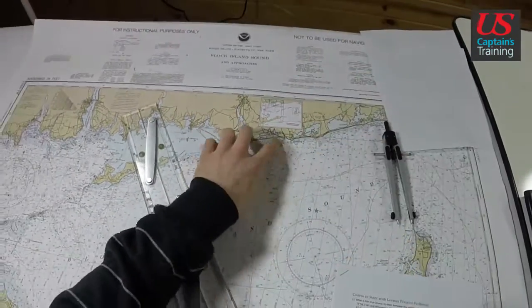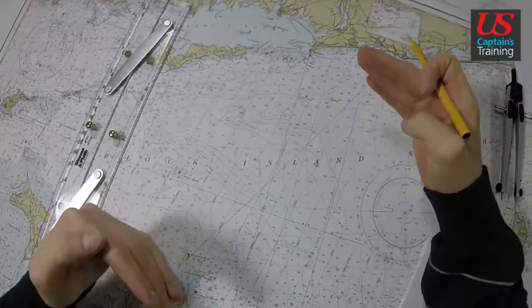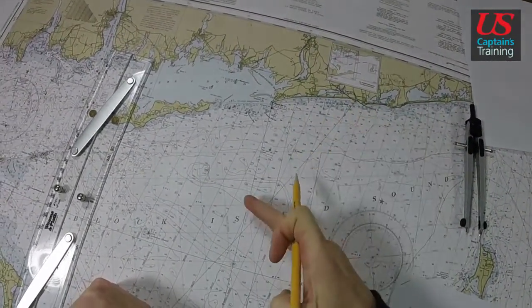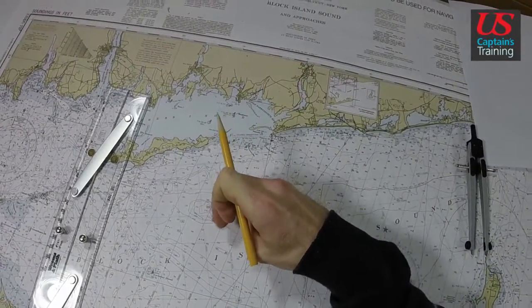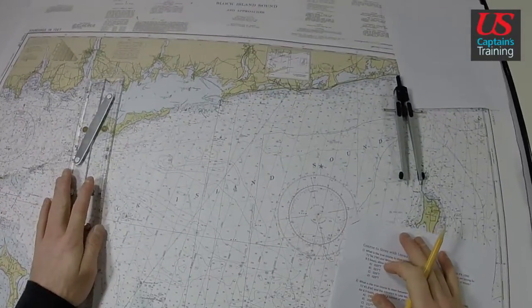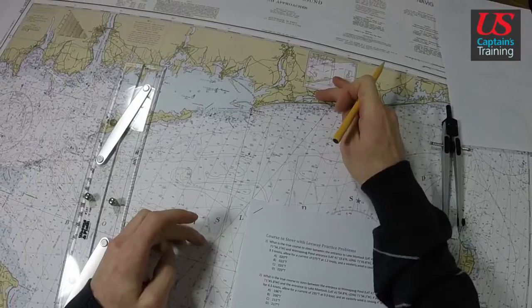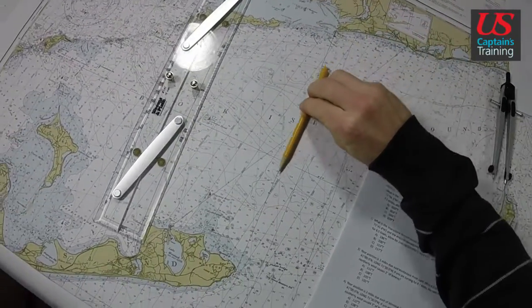Now we have the current. In one hour, you can think of it as the average current over this span. Again, in one hour, it would push us 0.9 nautical miles at a set of 295. So now, what we do is we find a boat speed. We add our boat speed to that. We give it a direction, and then we know how we're going to go down this line with the current.